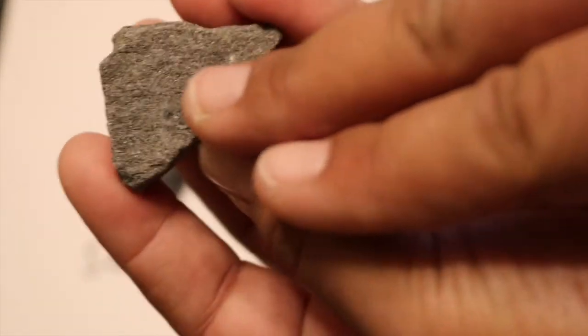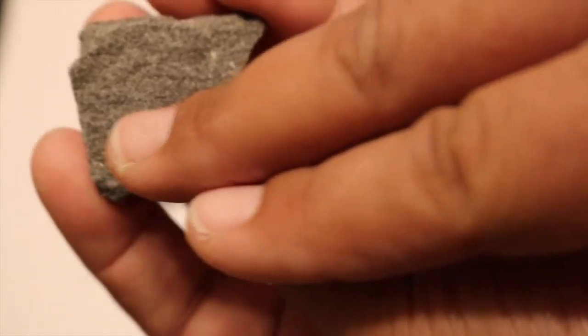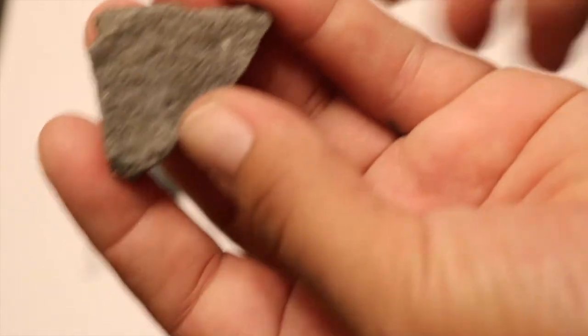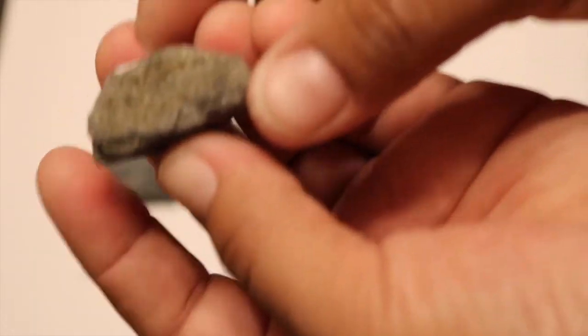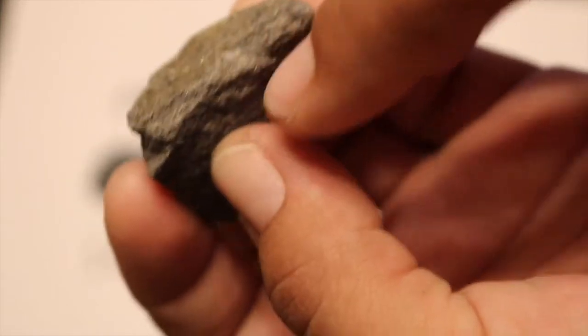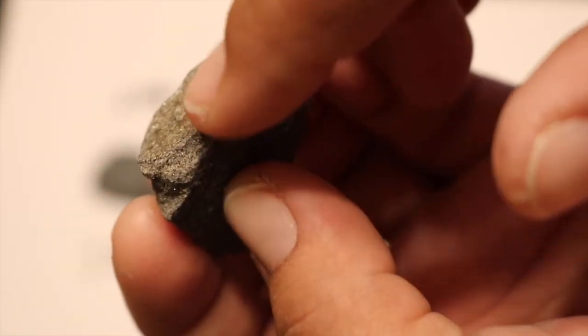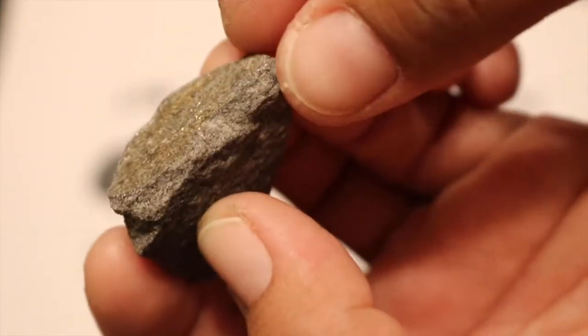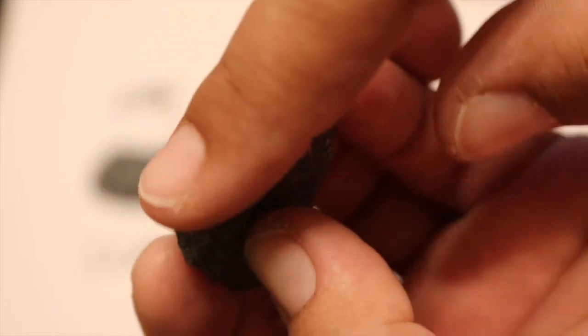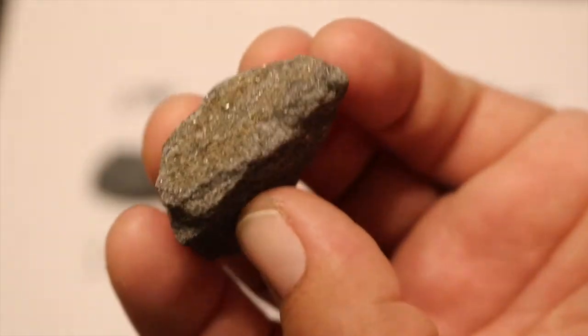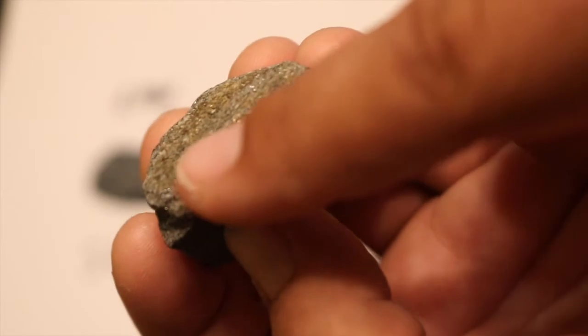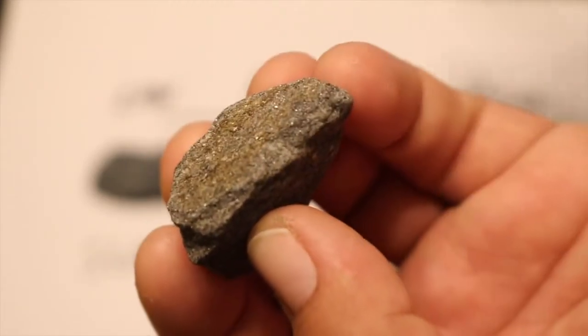Phyllite also has cleavage, which you may be able to make out on the camera here, but we call this crenulation cleavage. You can more easily see it on the top of this piece of phyllite, where it looks as if it just has these little waves, these undulations. This is just showing the alignment of these platier minerals, muscovite, in this sample.